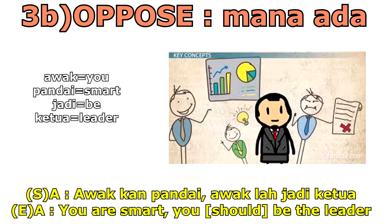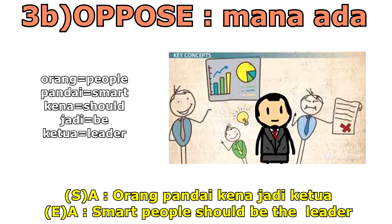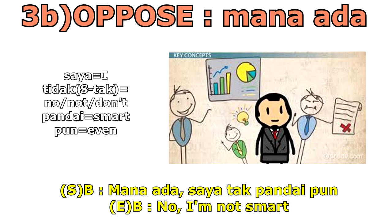Another objection example: somebody says "awak kan pandai, awak lah jadi ketua" — you are smart, you be the leader. You say "tak nak" (I don't want). They persist: "orang pandai kena jadi ketua" — smart people should be the leader. You oppose that idea: "mana ada, saya tak pandai pun" — meaning no, I'm not smart.